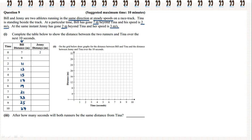Now we're going to do the same for Jenny. At the starting instant, she's 2 metres beyond Tina. She is travelling 3 metres per second, so we're going to add 3 each time. 2 plus 3 gives us 5, plus 3 gives us 8, and continuing on: 11, 14, 17, 20, 23, 26, 29, and 32.